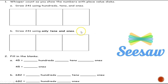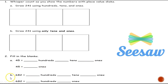It is now your turn. For number one, draw two hundred and forty-one using hundreds, tens, and ones. For number two, fill in the blanks: A — forty-five equals how many hundreds, tens, and ones? And forty-five equals how many ones? B — six hundred and eighty-two equals how many hundreds, tens, and ones? And six hundred and eighty-two equals how many hundreds and how many ones? Take a picture and send it to me. Good luck.